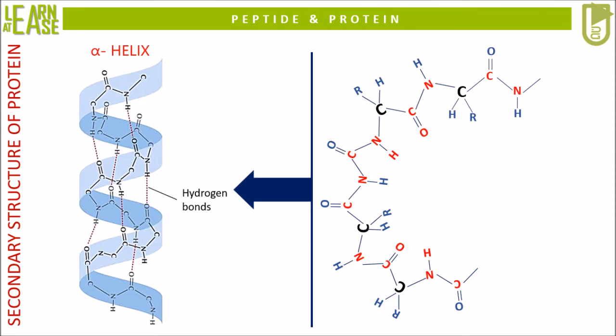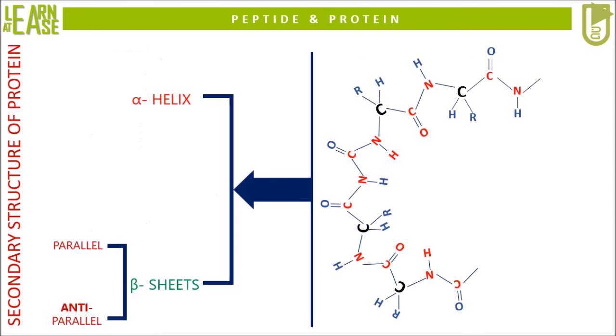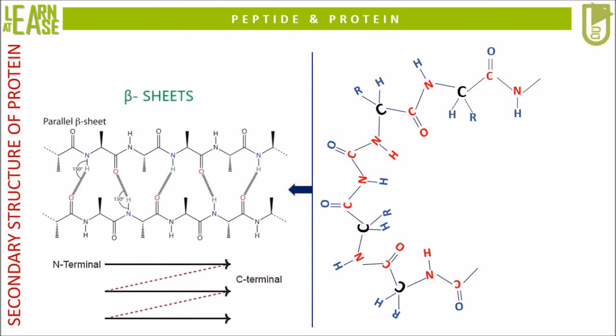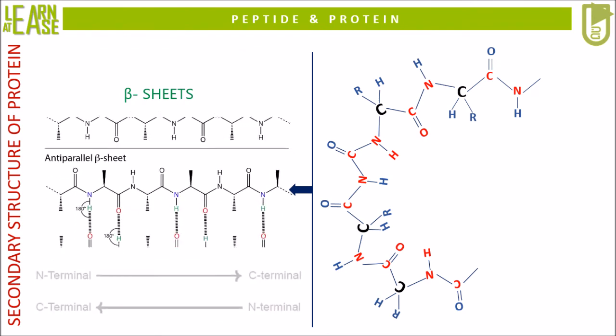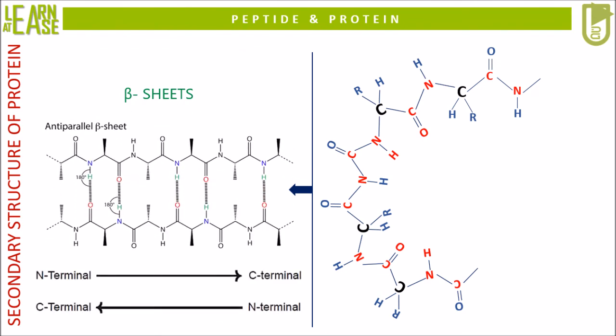Now let us see the next secondary structure of protein — beta sheets. Beta sheets can be of two types. The first type is parallel beta sheets, which can be formed by two peptides aligned in the same direction, that is from N-terminal to C-terminal, held together by hydrogen bonds. The second type is anti-parallel beta sheets, which can be formed by two peptides aligned in opposite directions, or the same peptide making a loop, held together by hydrogen bonds.